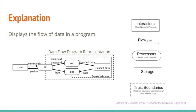A trust boundary represents something that must be passed to access parts of a program or data. A program boundary is represented by a box whose border is a dashed line. Every program contains a program boundary because to access the program, you must use or have the program. You cannot cross the program boundary without access to the program. If a user gains special access to parts of the program, then a user boundary exists. Typically, the only way to access the user boundary would be to log in as a user.